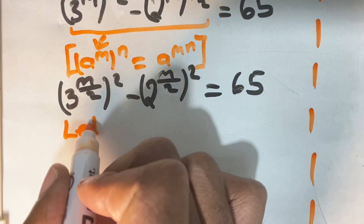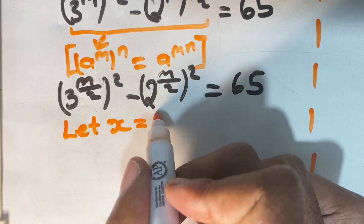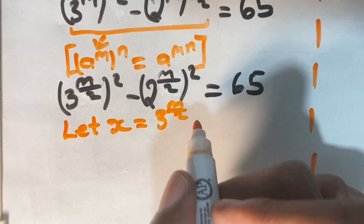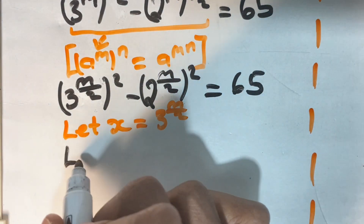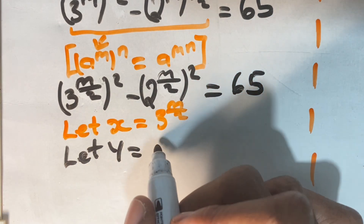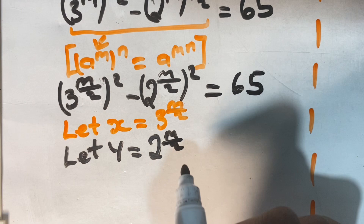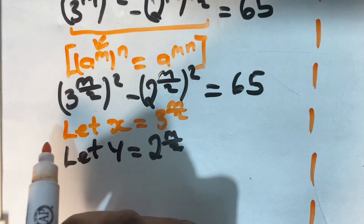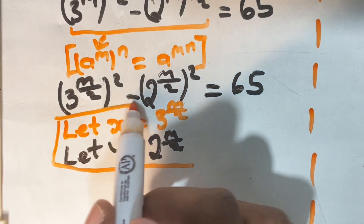Now we are going to represent what we have here in the form of variables. We're going to say let x equal to 3 to the power of m over 2, and let y equal 2 to the power of m over 2. In just a bit you'll see how having these two variables plays out very well in giving us our solution for this equation.